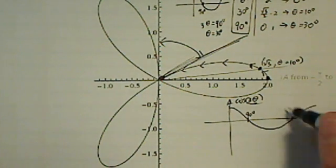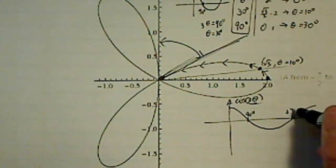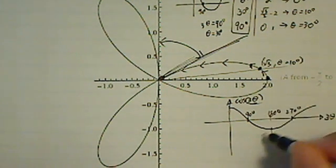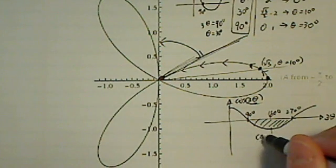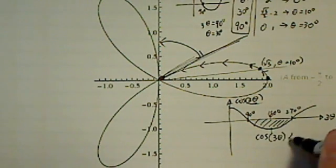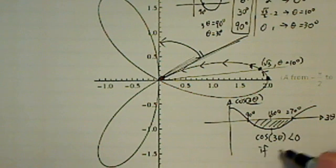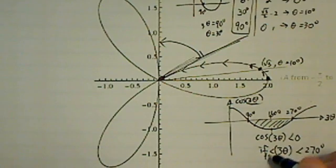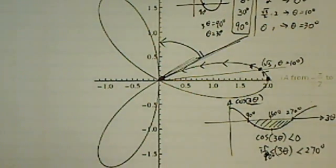Okay, when 3 theta equal to 90 degrees, all the way to 270 degrees, this is 180 degrees. In this chunk, as you can see, cosine of 3 theta is less than 0, if 3 theta is between 270 degrees and 190 degrees. I'm running out of room over here.